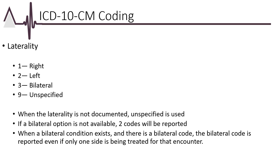Laterality is an important concept of ICD-10-CM and is particularly prevalent in the musculoskeletal system. Typically, the right side is identified in the diagnosis code with the number 1, the left side with the number 2, and bilateral conditions with the number 3. When laterality is not documented, the code is billed as unspecified. Per ICD-10-CM guidelines, if a bilateral option is not available, two codes will be reported — one for the right side and one for the left. When a patient has a bilateral condition, the diagnosis is coded as bilateral, even if only one side is being treated at that specific encounter.